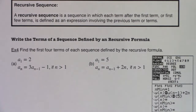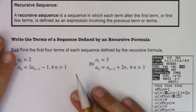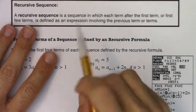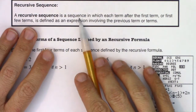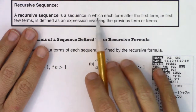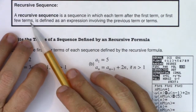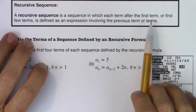Welcome to example 4. We're going to switch away from looking at sequences written with explicit formulas to sequences defined with recursive formulas. A recursive sequence is still a list of numbers separated by commas, but it's a sequence in which each term after the first term is defined as an expression involving the previous term or terms.